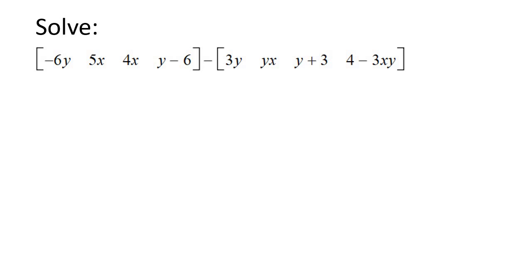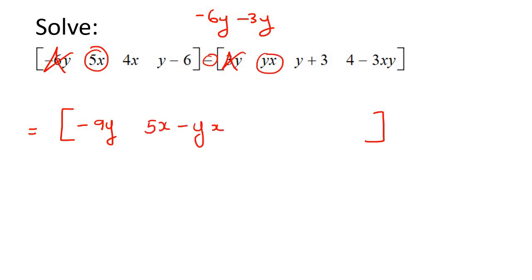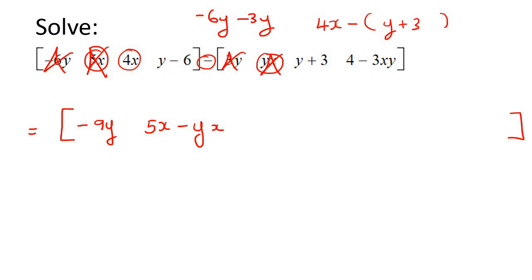Here's another one. Here we're using letters instead. Let's make a big matrix. All you're going to do is take this one take away this one. So it's going to be negative 6y take away 3y, which gives you negative 9y. Now we do 5x take away yx — you can't simplify further than that. Then the next one is 4x take away, and now the y plus 3, you put that in a bracket because it's y and 3. So that's going to end up becoming 4x take away y take away 3.